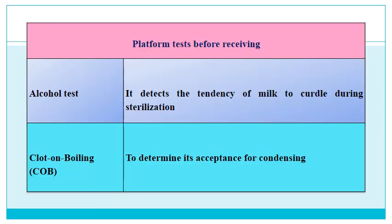Platform tests are conducted before receiving the milk to assess quality. The most important is the alcohol test, which detects the tendency of milk to curdle during sterilization or heat treatment — if there is some acidity, there will be curdling with alcohol. Another common test is clot-on-boiling: if we boil the milk, whether it clots. This determines its acceptance for condensing because the milk has to go through severe heat treatment.